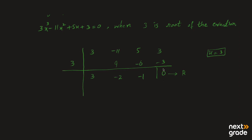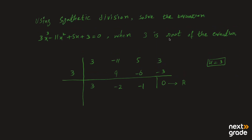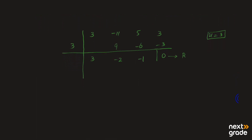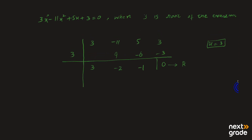یہ last value جو ہوتی ہے اسے remainder کہتے ہیں — r stands for remainder۔ اگر کوئی value root ہو تو remainder 0 آئے گا، اور یہاں remainder ہمارا 0 ہی آ چکا ہے۔ جب ہم کسی polynomial کو کسی number پر divide کرتے ہیں تو اس equation کی degree ایک کم ہو جاتی ہے — power 3 تھی اب power 2 ہو جائے گی۔